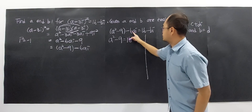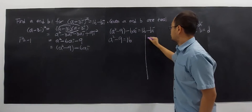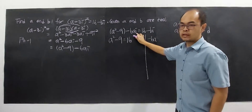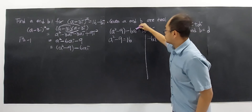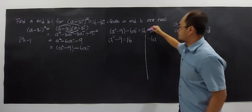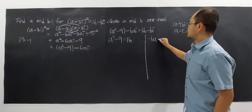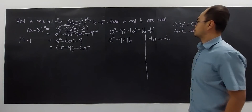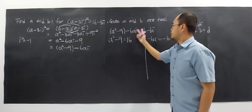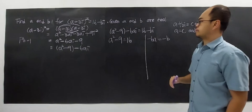Next, comparing the imaginary parts — you don't write the i itself, just equate the coefficients. So negative 6A equals negative B for the imaginary part.